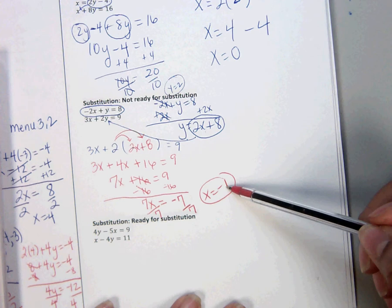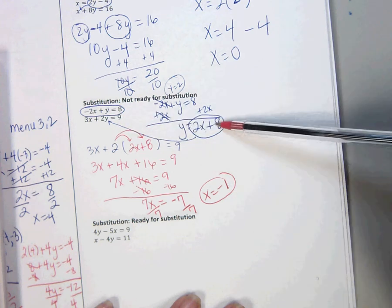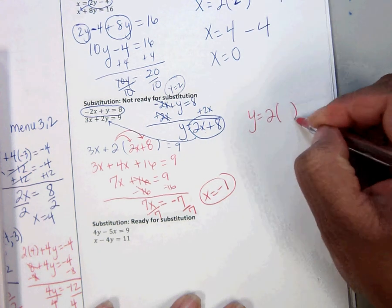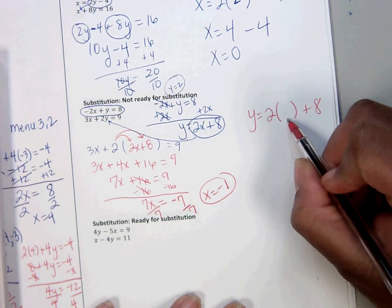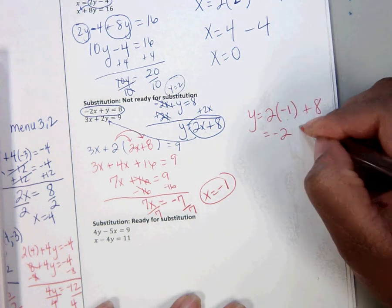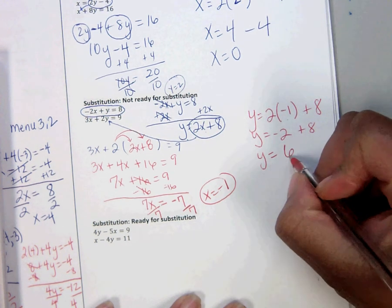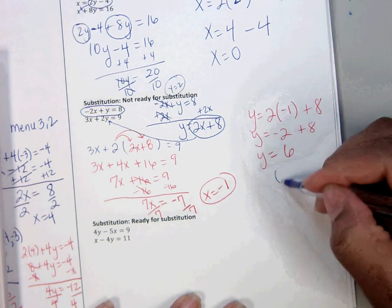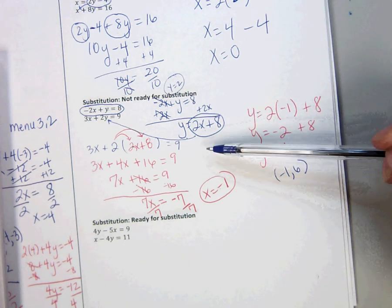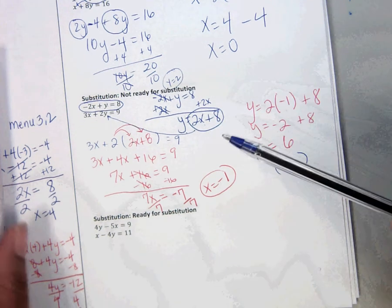We need to find y. So you can plug it into either one of these. I'm going to choose this one because it's already solved for y. y equals 2 plus 8. What number goes in here? x. Negative 2 plus 8 is 6. So the solution for this problem is negative 1, 6. I do admit this is a harder problem. But if you can do it, you'll be ready for algebra 2.